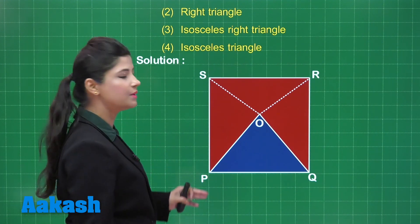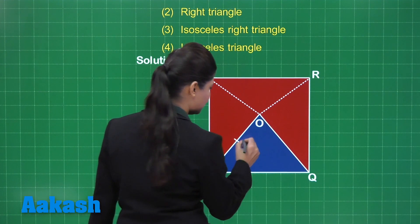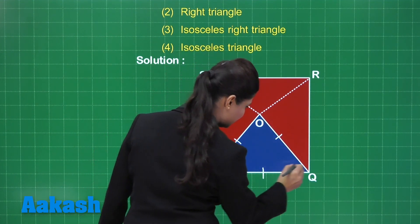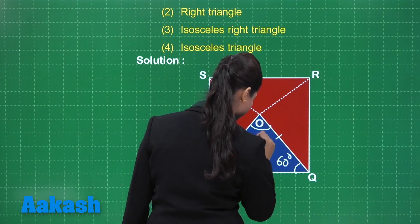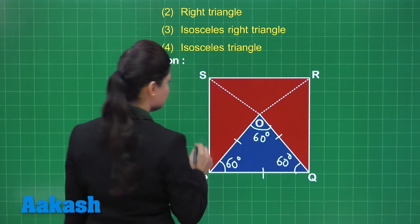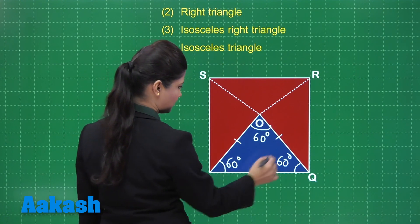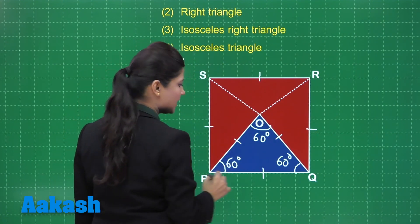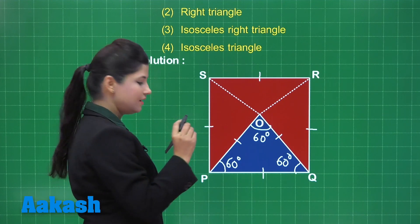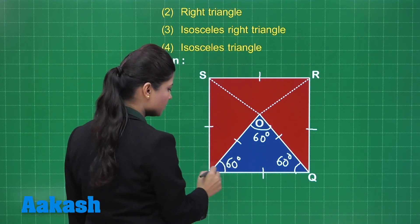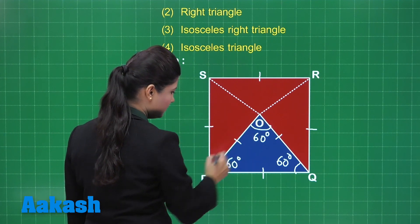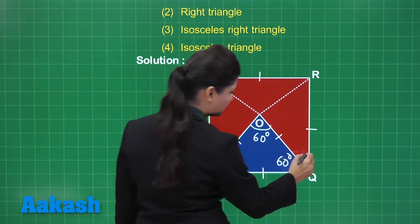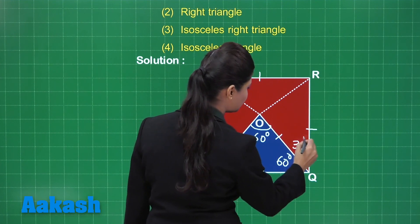In an equilateral triangle, all sides are equal and each angle measures 60 degrees. In square PQRS, all four sides are equal and each angle measures 90 degrees. Considering angle P of the square — it is 90 degrees total. Since angle OPQ is 60 degrees, the remaining angle OPS is 30 degrees. Similarly, the remaining angle OQR at vertex Q is also 30 degrees.